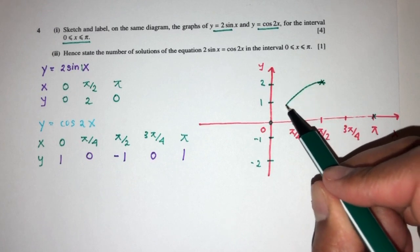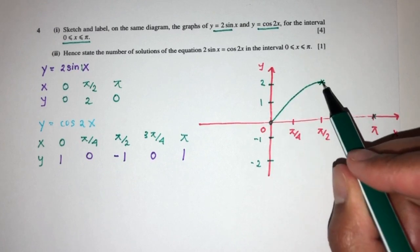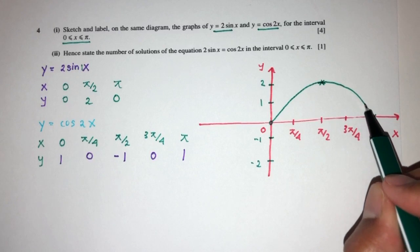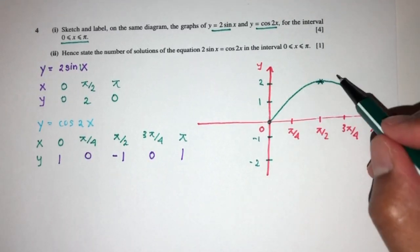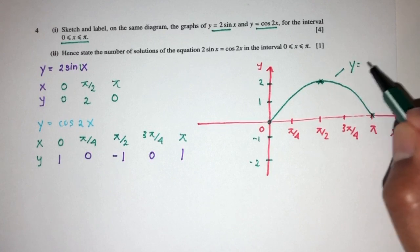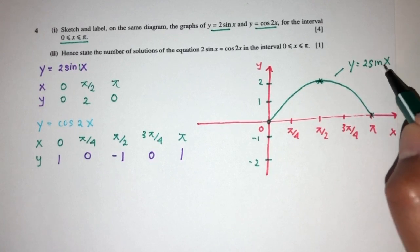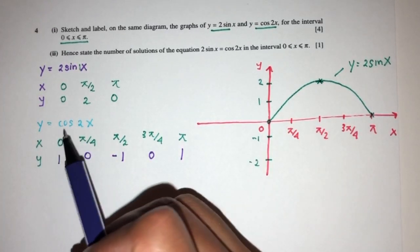Should be something like this. I guess you can try better, make it more smooth. But that should be my graph for y = 2sin(x). The next one we have cos(2x).